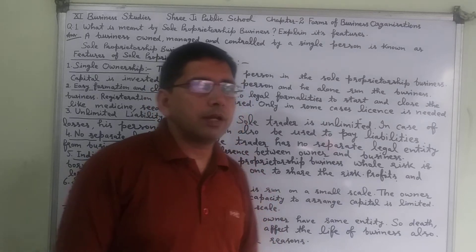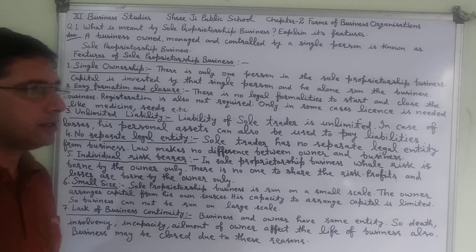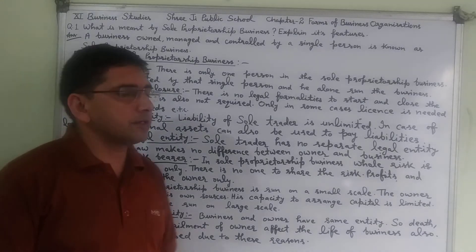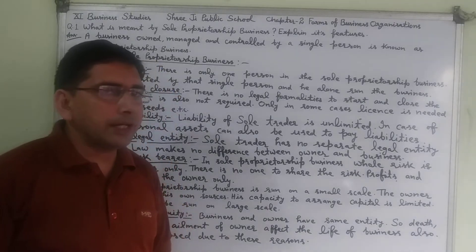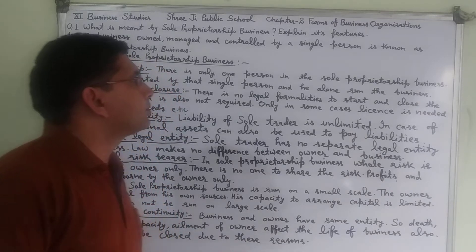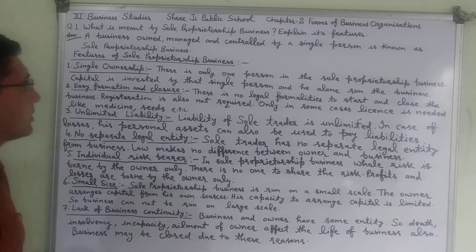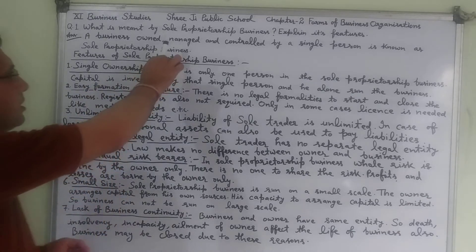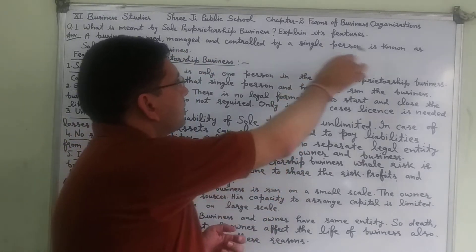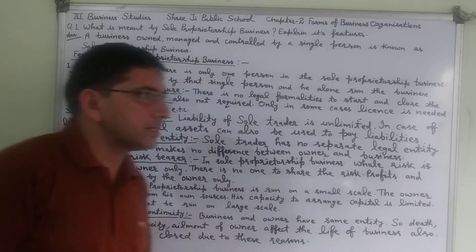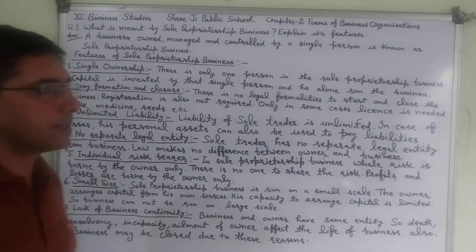Hello students, welcome to 3G Public School online classes. We are in 11th Business Studies. Today we are going to start our second chapter, that is Forms of Business Organizations, and the very first topic is sole proprietorship business and its features. We shall discuss the features as well as the meaning of sole proprietorship business.